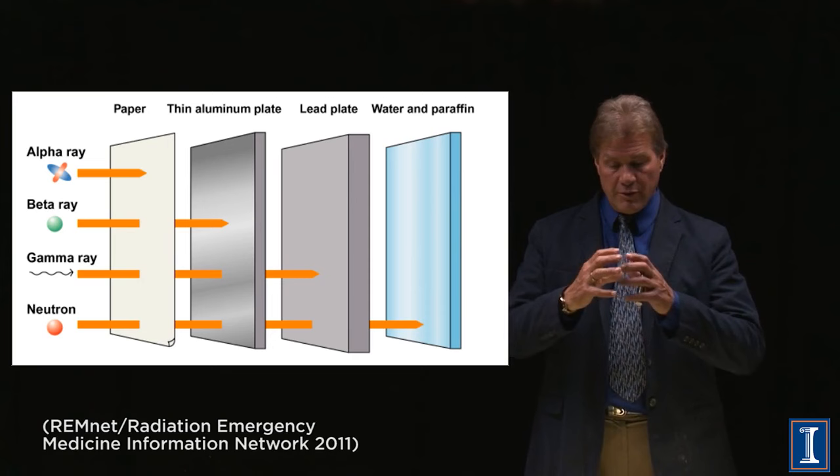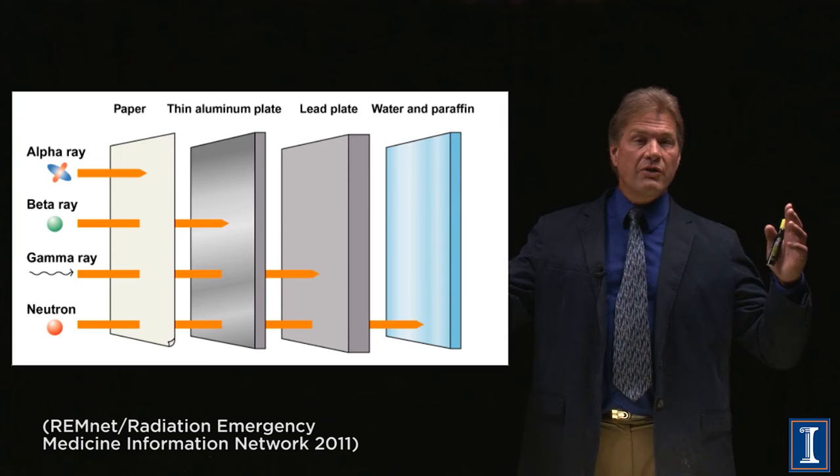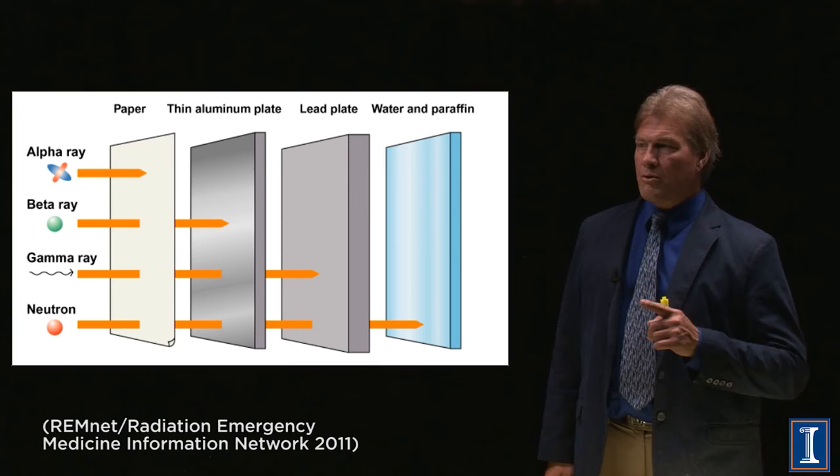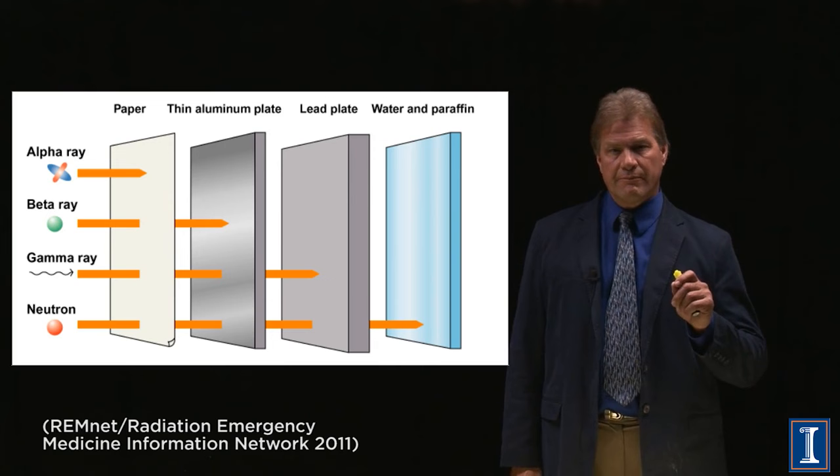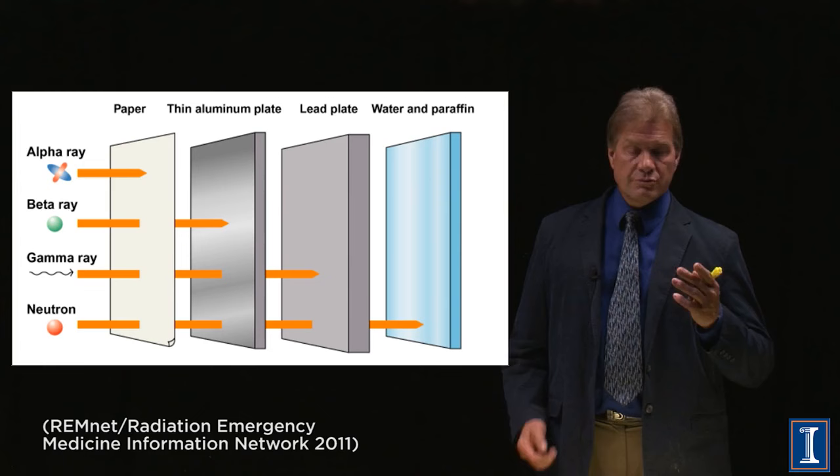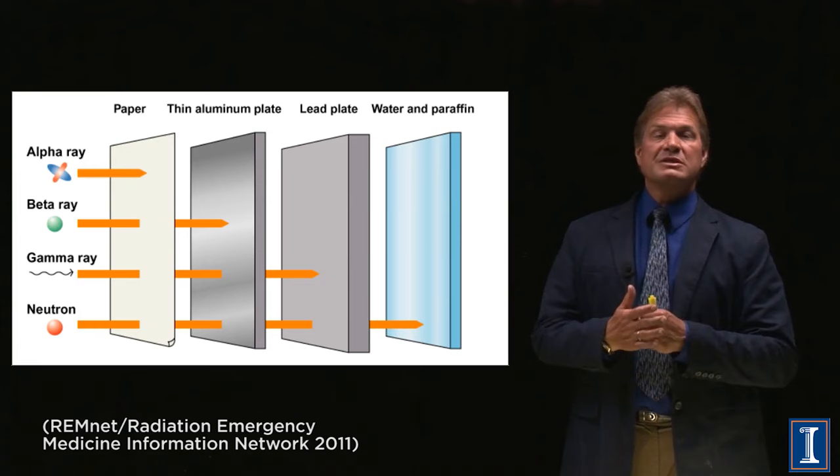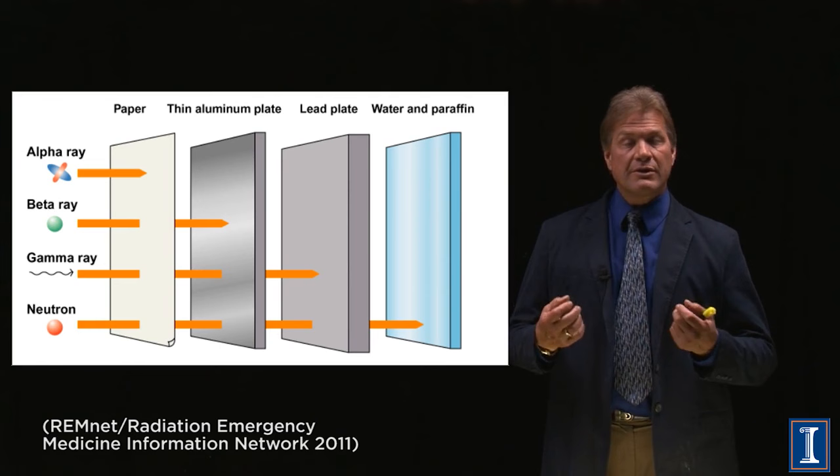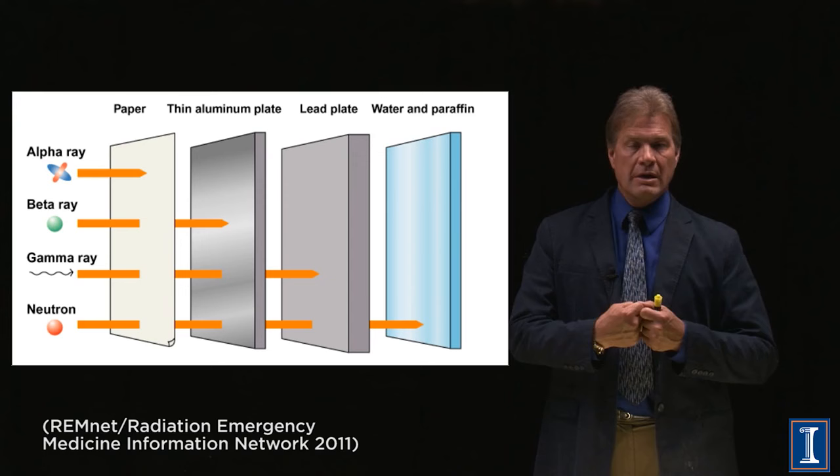Neutrons only interact with the nucleus. And if you remember, an atom has this tiny, tiny nucleus, and almost all of it is empty space. So to neutrons, everything looks like empty space. You see here where it says water or paraffin. That's because they have hydrogen in them. Neutrons are hard to stop. Neutrons will only collide with the nucleus. And most of the time, if they hit a very large nucleus, they just scatter. They just bounce off and keep going.